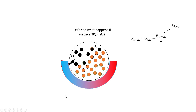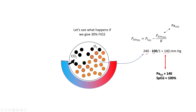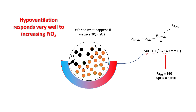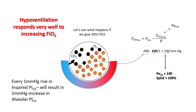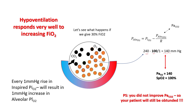If you give these patients oxygen, the partial pressure of inspired oxygen is now increased — not 150, but around 240 — and even if your alveolar CO2 is 100, your PaO2 is now 140, which gives you saturations of 100%. So hypoventilation responds very well to increasing FiO2. For every 1 mmHg rise in inspired PO2, there will be a 1 mmHg rise in alveolar PO2. One important thing to note: your PaCO2 still remains the same, so your patient will still be obtunded.